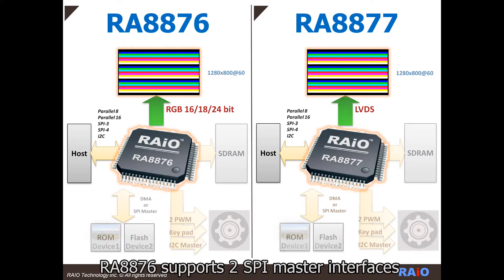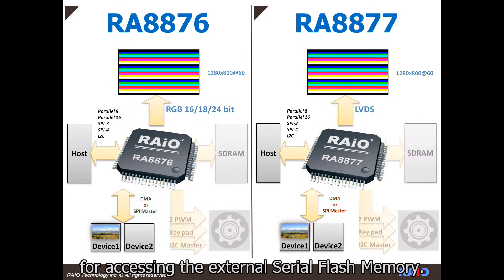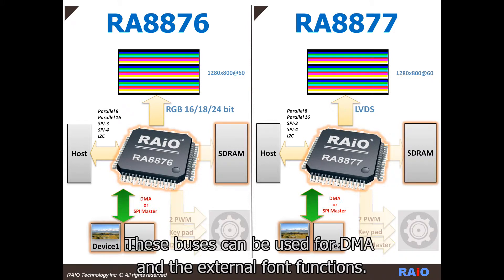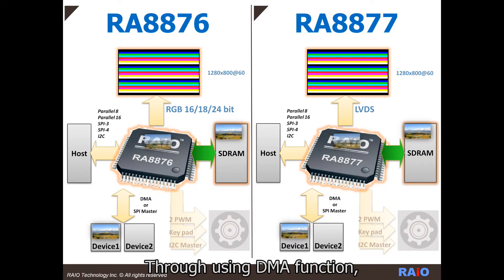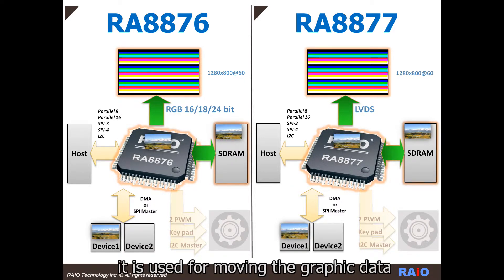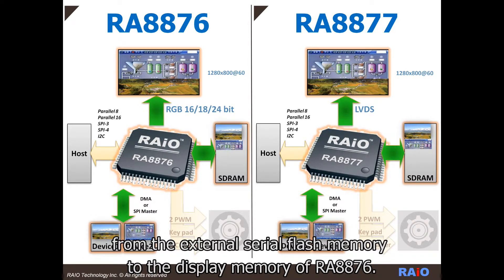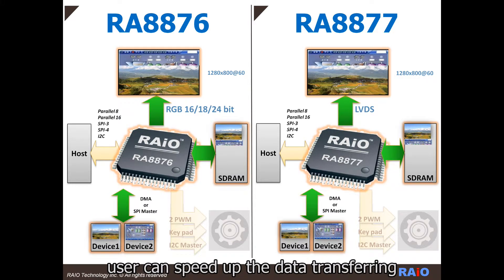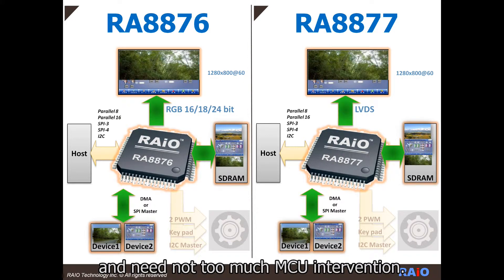RA8876 supports two SPI master interfaces for accessing the external serial flash memory. These buses can be used for DMA and external font functions. Through the DMA function, it is used for moving graphic data from the external serial flash memory to the display memory of RA8876. Users can speed up data transferring and do not need too much MCU intervention.